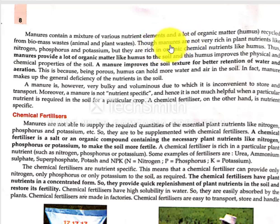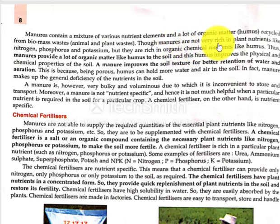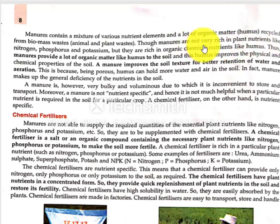This is an organic process. We don't know that these are specific nutrients. Now we are going to study fertilizers. Manures are made but they are not very rich in nutrients, so you will get only average yield.